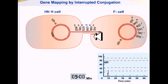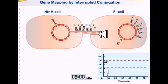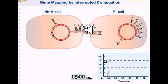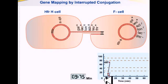The two types of cells are: HFR-containing cell and F- cell. As the chromosome in the HFR cell is replicated and transferred to the F- cell, the first element to be transferred is the F-factor, followed in order by the genes closest to the F-factor — threonine, then leucine, then Azi, then Ton, then lac+, and so on, as seen in the picture.